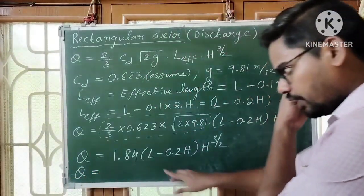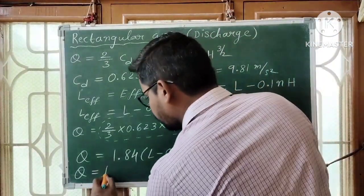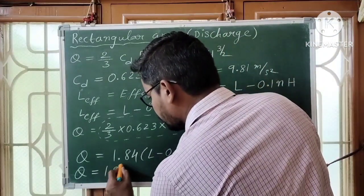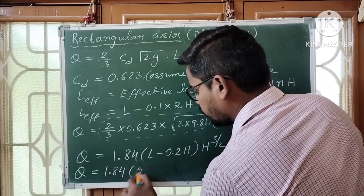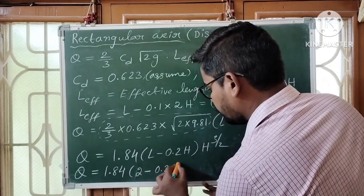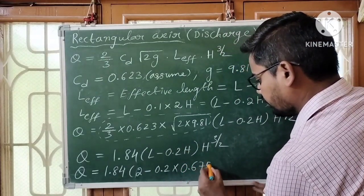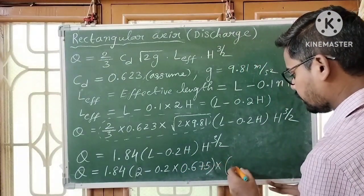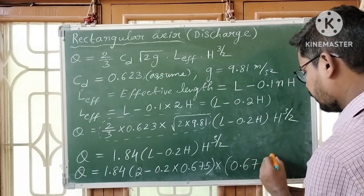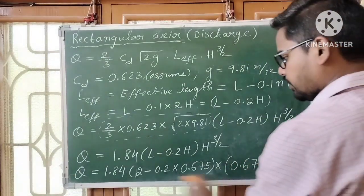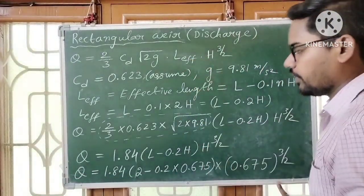Now substituting our given values: Q is equal to 1.84 into length 2 meters minus 0.2 into H value 0.675, into H power 3/2 which is 0.675 whole power 3/2. Calculating this gives us the discharge over the rectangular weir.